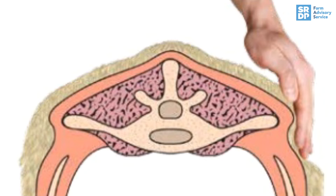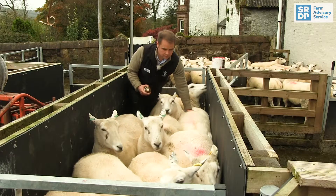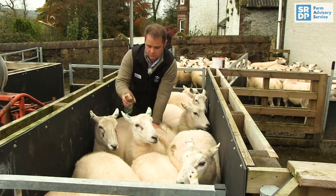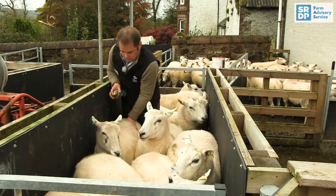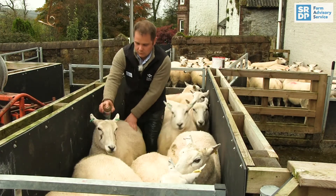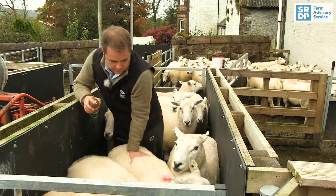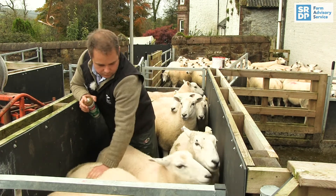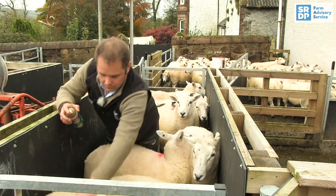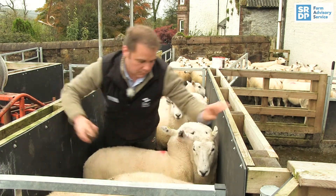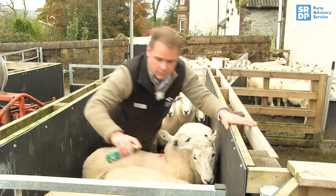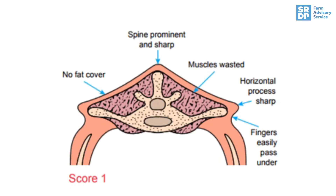The final step is to assess the eye muscle over the loin. This is done by pressing the fingertips into the area between the vertical and horizontal processes of the ewe.